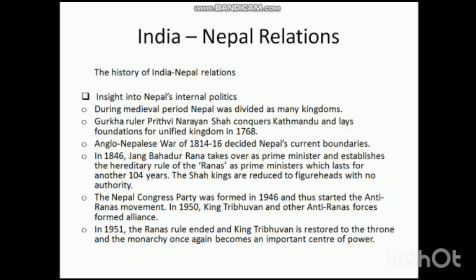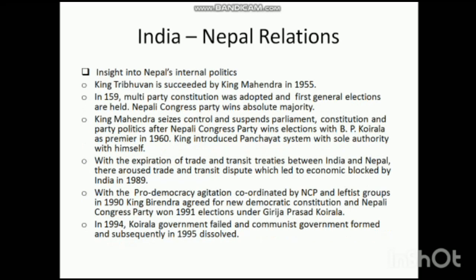During the reign of the Ranas, the Indo-Nepal Treaty of 1950 was signed — we will discuss that treaty further. Another landmark development was the emergence of the Nepal Congress Party, formed in 1946, which started the anti-Rana movement. With the emergence of Nepal's political party came the ideas of republicanism, parliamentarianism, and democracy. In 1950, the hereditary monarch King Tribhuvan, along with other anti-Rana forces, formed an alliance to overthrow the Ranas. In 1951, Rana rule ended and King Tribhuvan was restored to the throne.